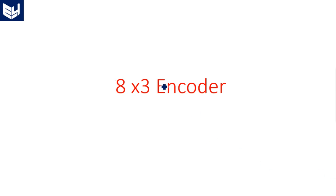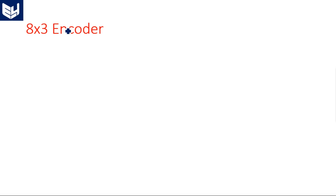In this video I'm going to explain about the 8 by 3 encoder. In the previous videos we introduced what an encoder is, the basic size of the encoder, how to represent the encoder logic diagram, and we have already seen the 4 to 2 encoder and its VHDL code. If you have not gone through them, go to the previous two videos to understand how to write the VHDL code and what an encoder is.